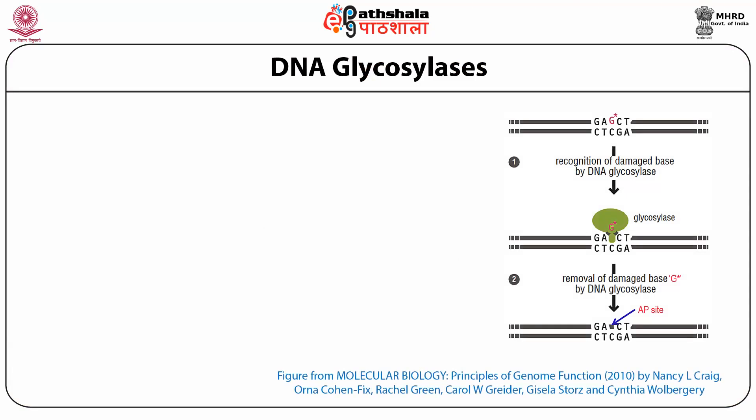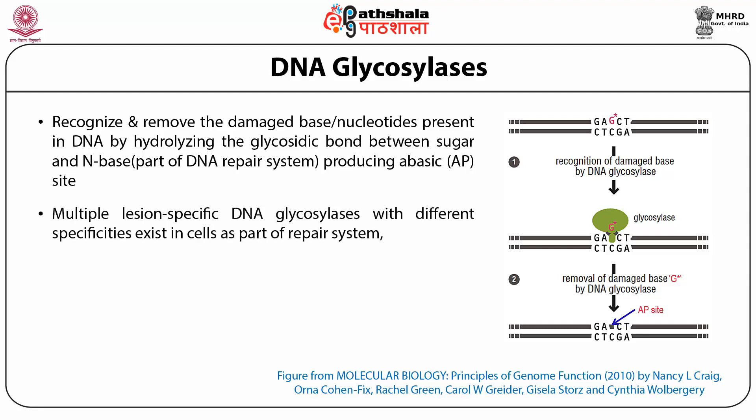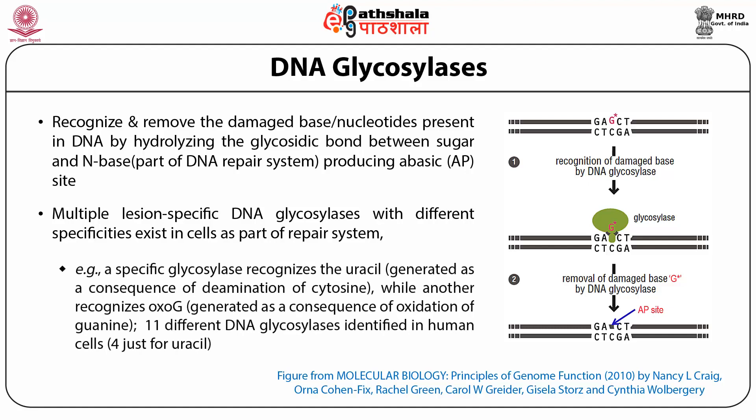DNA glycosylases are a special class of enzymes that recognize and remove damaged base nucleotides present in DNA by hydrolyzing the glycosidic bond between the sugar and the nitrogenous base. They are part of the DNA repair system and produce abasic sites, usually referred to as AP sites. Multiple lesion-specific DNA glycosylases with different specificities exist in cells. For example, a specific glycosylase recognizes uracil generated by deamination of cytosine, while another recognizes 8-oxo-G generated by oxidation of guanine. Eleven different DNA glycosylases have been identified in human cells.